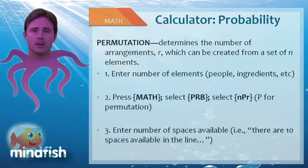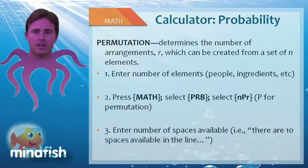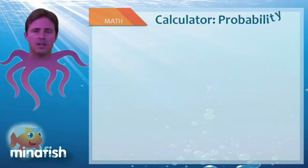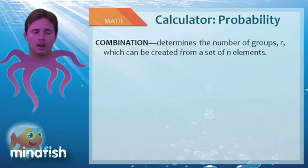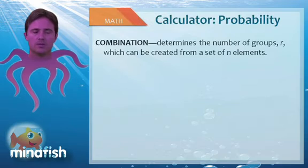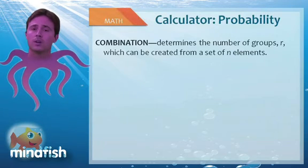And that's it. It will tell you how many arrangements of three you can make from a group of 10. In a very similar sense, combination problems are the same thing. Combinations determine the number of groups of r, which can be created from the set of n elements. A group doesn't have order, or order doesn't matter.